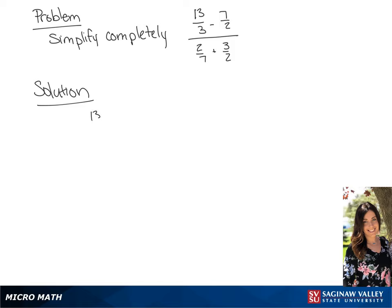We have 13 over 3 minus 7 over 2 in the numerator, so we are going to find a common denominator for those two fractions. That will be 6, so we'll multiply the first fraction by 2 over 2 and the second fraction by 3 over 3.